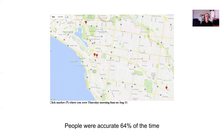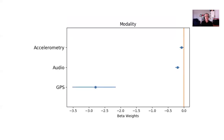There was a one-week retention interval, and then participants returned for testing. They received a series of trials in which they were given a time — for instance, Thursday morning, 8am on August 15th — and four pins, and had to identify which of those four locations they had been at at that time. All of the locations were taken from places they had actually been during the collection period. When we did this, people were accurate 64% of the time.